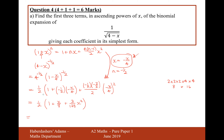Now multiplying by that initial factor of a half — bringing in the 4 to the power of minus a half that we pulled out earlier — the final binomial expansion is: 1/2 + x/16 + 3/256 · x². That's the binomial expansion for 1 over the square root of (4 minus x).